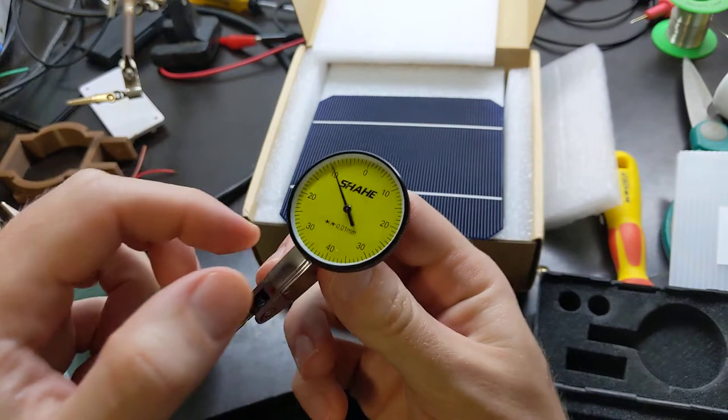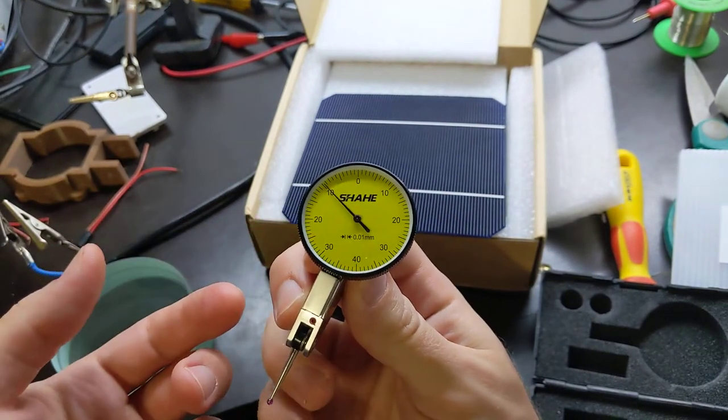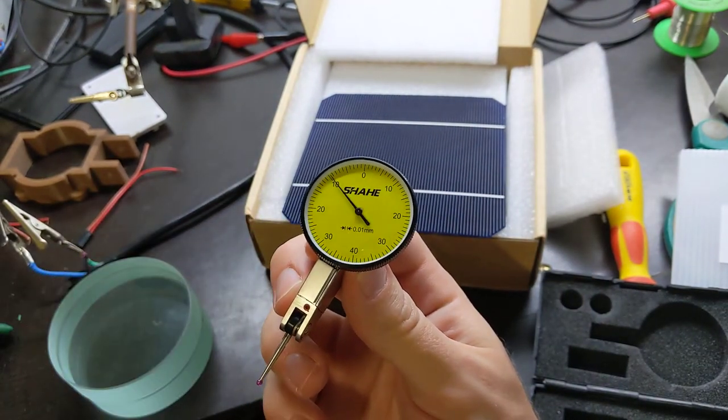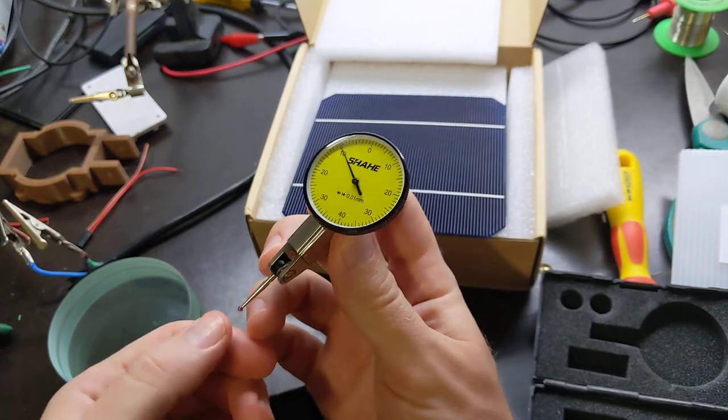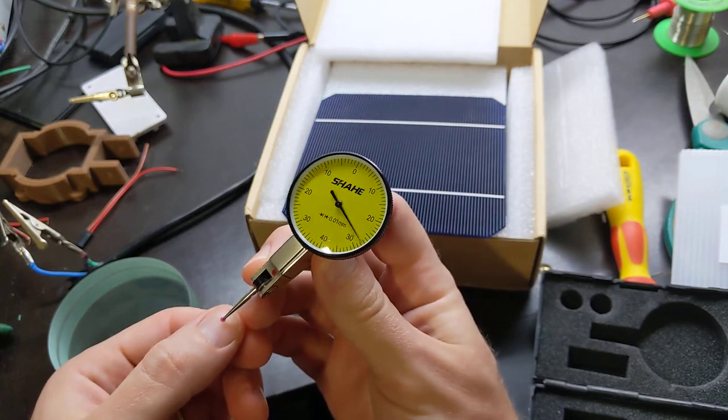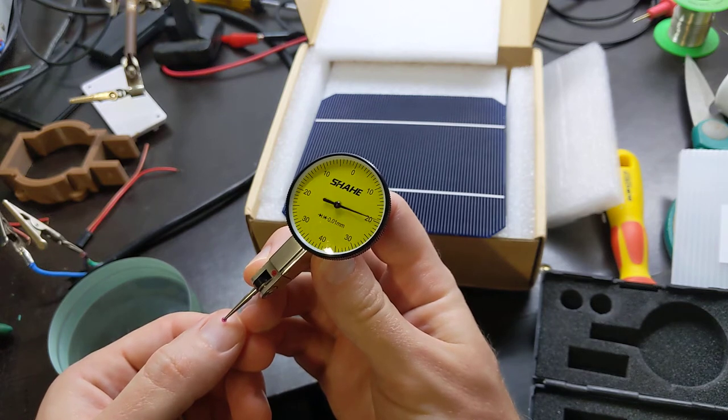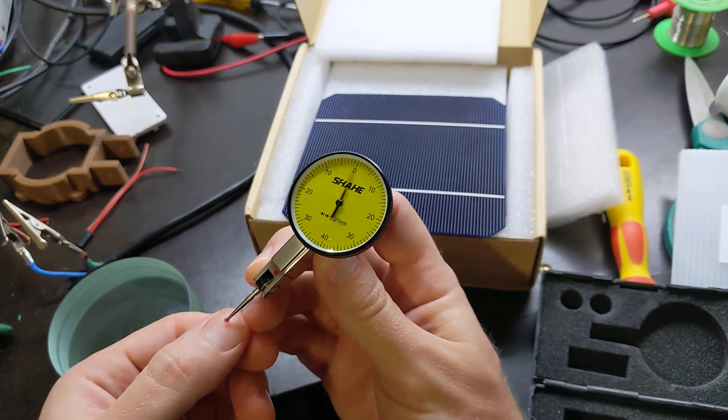So I asked around and these are the best cheap option, the best Chinese made option. It's like 60 bucks, I think. And it's 0.01 mil dial indicator.